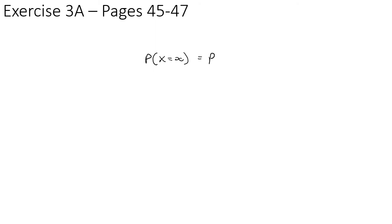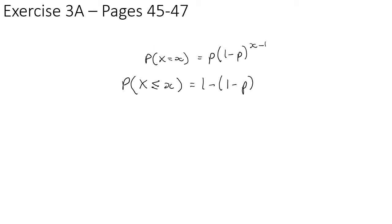You should now be able to do exercise 3a on pages 45 to 47 of the textbook. To summarize the formulas: the probability of getting success on a particular trial X is P times (1−P) to the power X minus one. The probability of success occurring up to the Xth trial is one minus the probability of failure happening X times, i.e., one minus (1−P) to the power X.